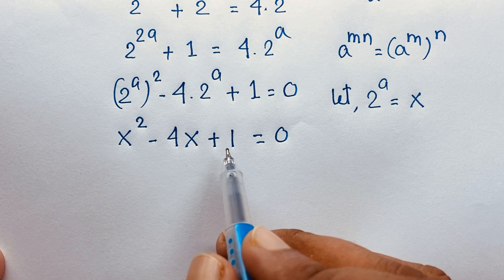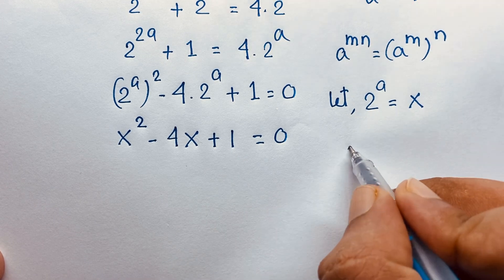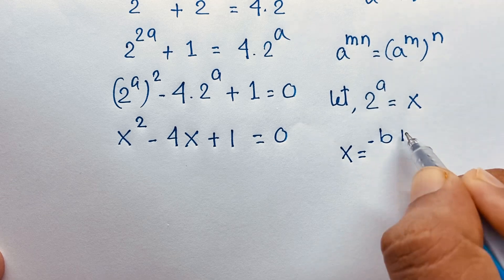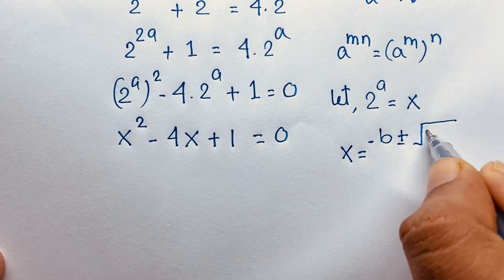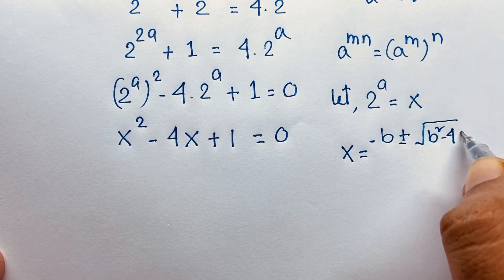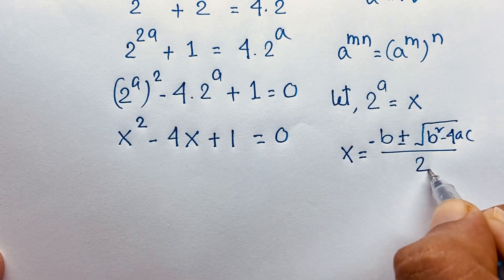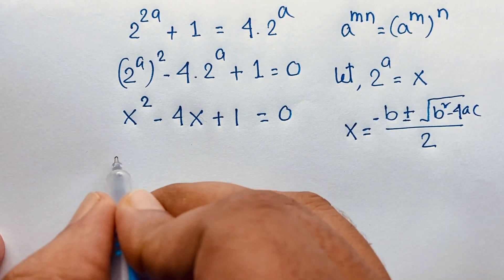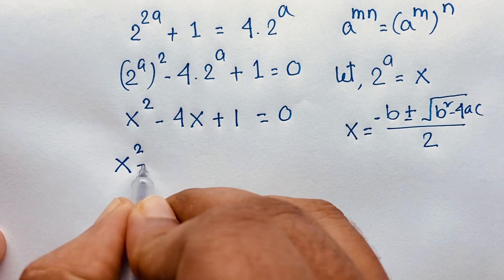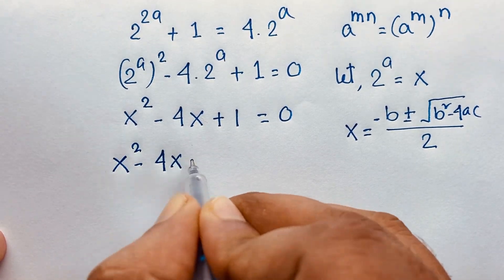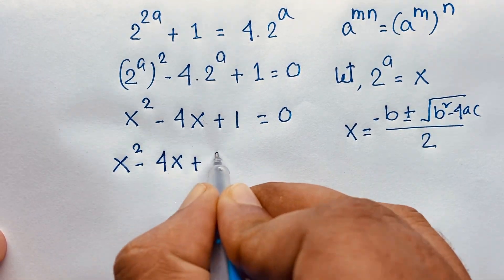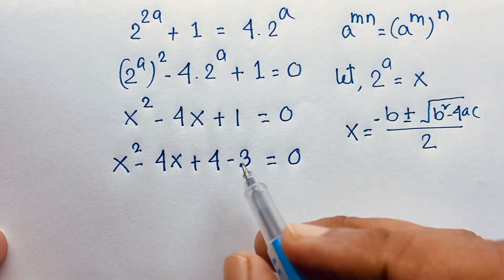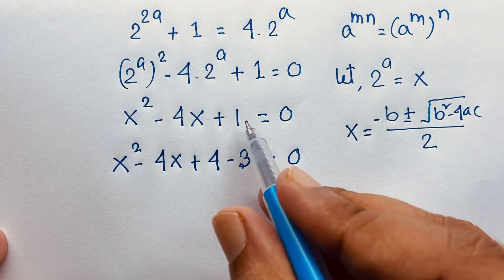You can apply the quadratic formula here. Rewriting as x squared minus 4x plus 4, then subtracting 3, equals 0. So 4 minus 3 equals 1, completing the square setup.